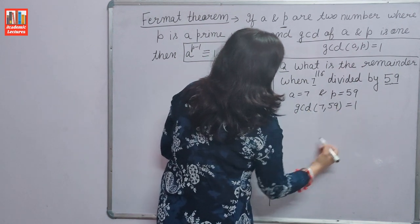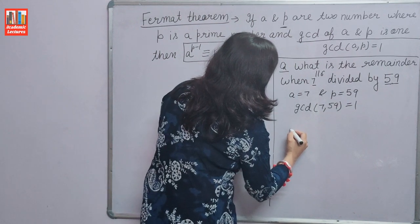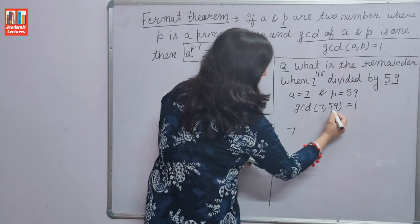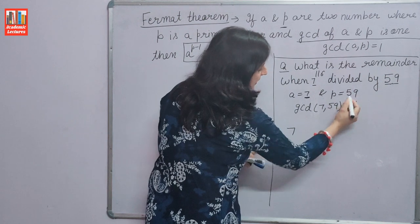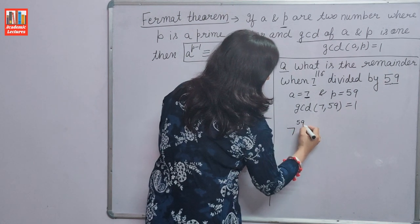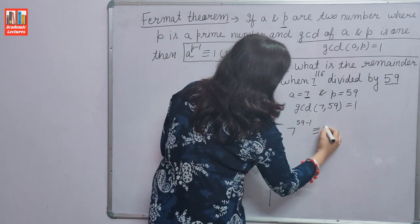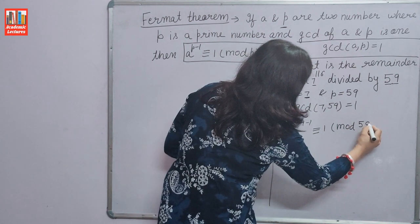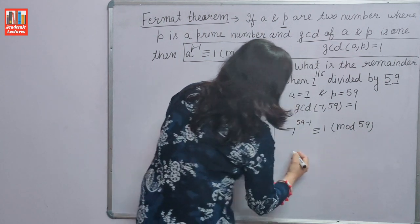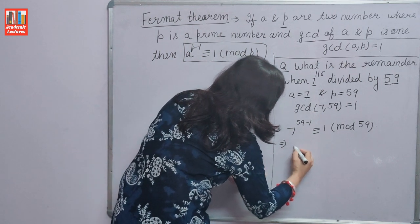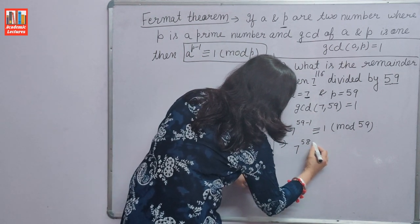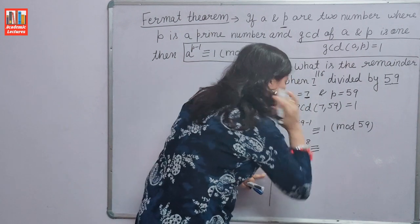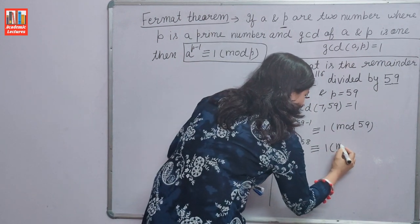So, A raised to the power P minus 1: A is 7, so 7 raised to the power 59 minus 1 is congruent to 1 modulo 59. Therefore, 7 raised to the power 58 is congruent to 1 modulo 59.